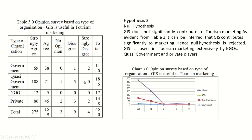Table 3 shows the opinion survey based on type of organization on GIS usefulness in tourism marketing. Null hypothesis 3: GIS does not significantly contribute to tourism marketing, as evidence from table 3. It can be inferred that GIS contributes significantly to marketing; hence the null hypothesis is rejected. GIS is used in tourism marketing extensively by NGOs, COSI, government, and private players.